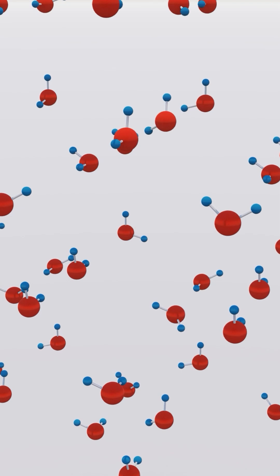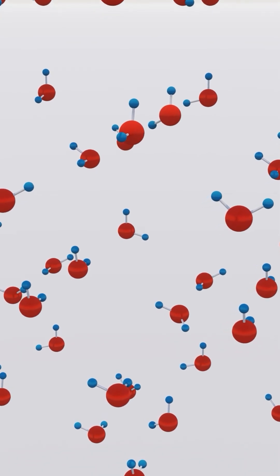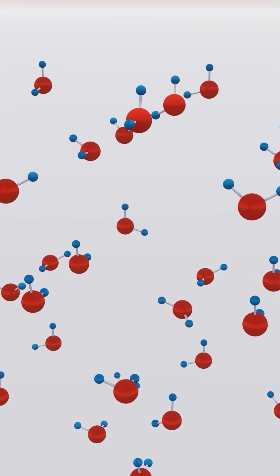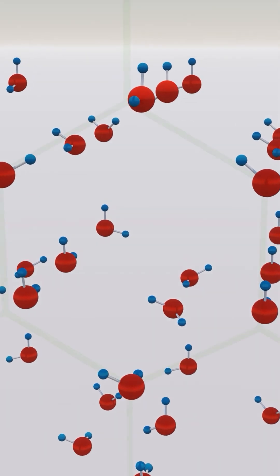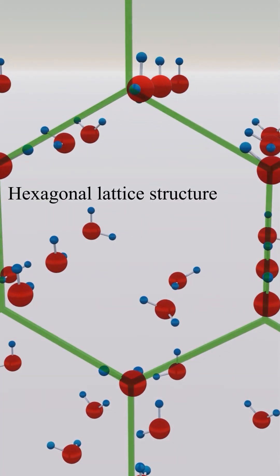This lack of movement now allows for formation of hydrogen bonds between neighboring molecules, resulting in a network of interconnected hydrogen bonded crystalline structure, also known as a hexagonal lattice structure.